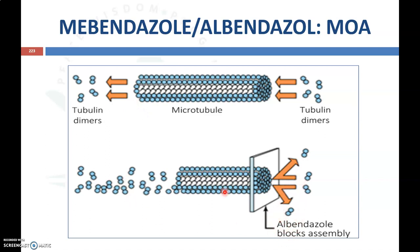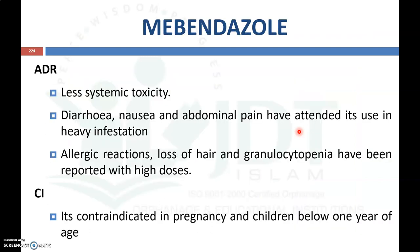Albendazole will bind with the tubulin dimers and it will prevent the polymerization into a tubular-like structure. Coming to the adverse drug reactions of mebendazole: usually it shows less systemic toxicity. Some common adverse drug reactions like diarrhea, nausea, and abdominal pain have been noted. In heavy infestation, allergic reaction, loss of hair, and granulocytopenia have been reported with higher doses. Mebendazole is contraindicated in pregnancy and in children below one year of age.